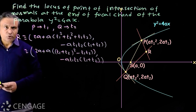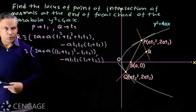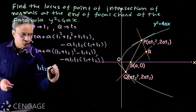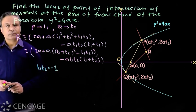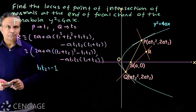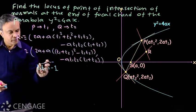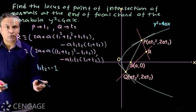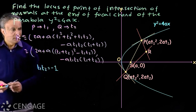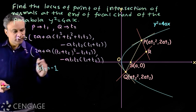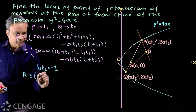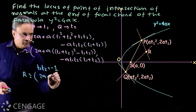Since PQ is a focal chord, for a focal chord we know that t₁t₂ = -1. For this standard equation of the parabola, the product of the parameters at the ends of a focal chord is -1. So putting this value into the coordinates, we get the coordinates of point R as x = 2a + a(t₁ + t₂)² + 1).